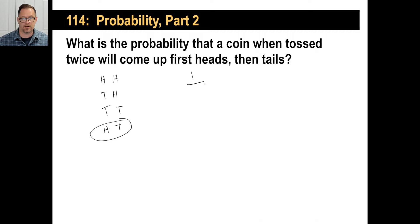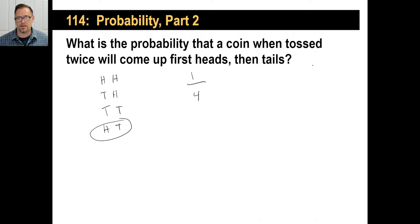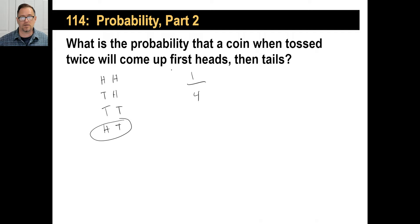At some point, rather than writing out all possibilities for 15 coin tosses, someone figured out a formula. The formula is: take the probability of the first favorable outcome and multiply it by the probability of the second, and keep multiplying for as many events as you have. So the probability of heads is one-half, and the probability of tails is one-half, and one-half times one-half equals one-quarter. You just multiply one probability times the other to find the total probability.